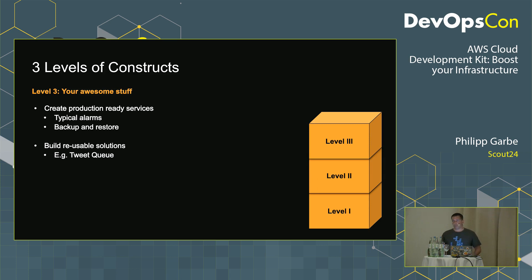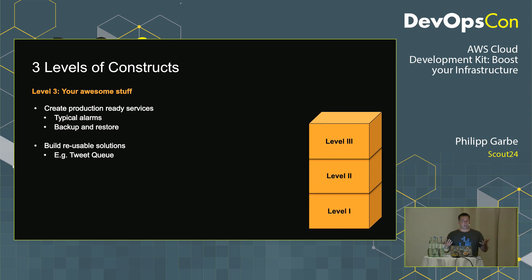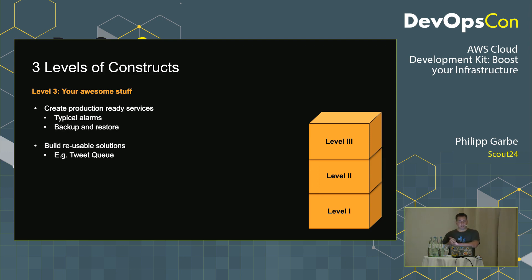Level 3 is where you can build your own awesome stuff, often on top of Level 2 constructs, creating production-ready services. A good example: you can build reusable solutions like a 'tweet queue' construct library that gets a feed of Twitter search results based on a keyword and puts it in an SQS queue — the only parameters are a Twitter API key and a hashtag. Or a table viewer for DynamoDB that builds a mini-application to view your table content. These are higher-level components that can be reused by others.